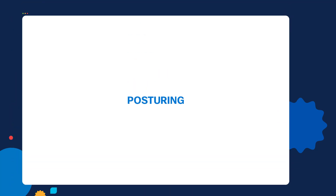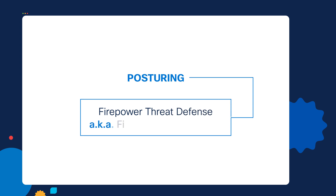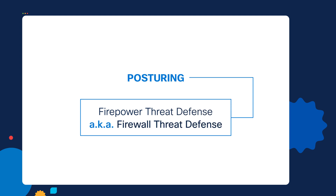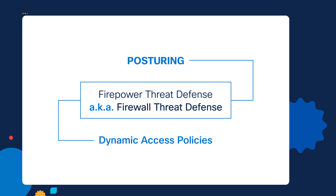Let's focus on the reality of securing the network. Posturing is a key technology that we can use in order to secure the network. We talked about posturing before on the firewall — the Firepower Threat Defense, also called the Firewall Threat Defense technology — which can provide a technology called dynamic access policies. It's a great technology and provides a good way to perform posturing. However, one of the things it cannot do is force antivirus software to activate or install if it's missing or out of date.